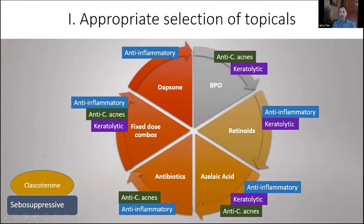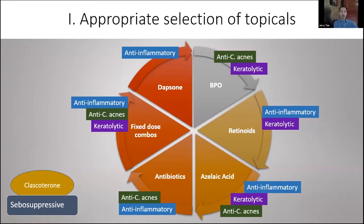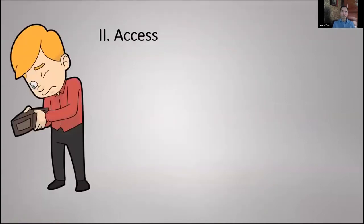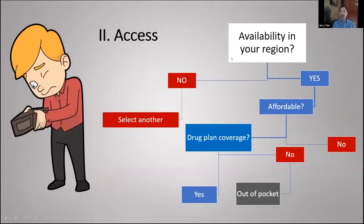Clascoterone will be marketed fairly soon in a number of jurisdictions. It's the only topical that also has a sebum-suppressive role, meaning we may now be able to impact all four quadrants: anti-inflammatory effects, anti-C. acnes effects, reducing follicular infundibular keratinous hyperkeratosis, and reducing sebum. This is the first time we'd be able to address all of those aspects. As for access, if it's available but not affordable, that leads to primary non-adherence.